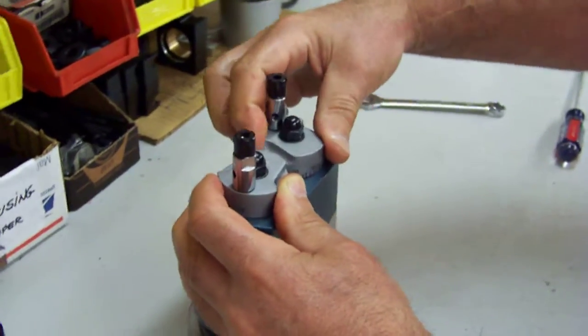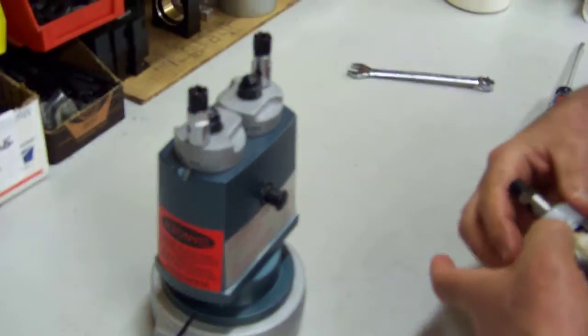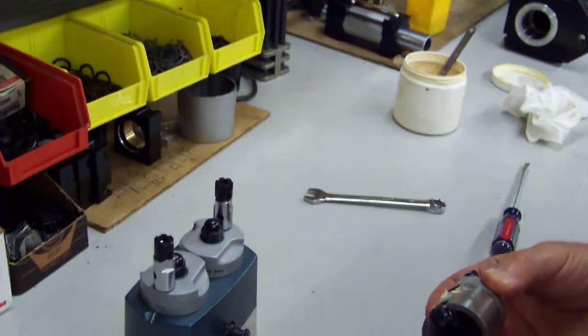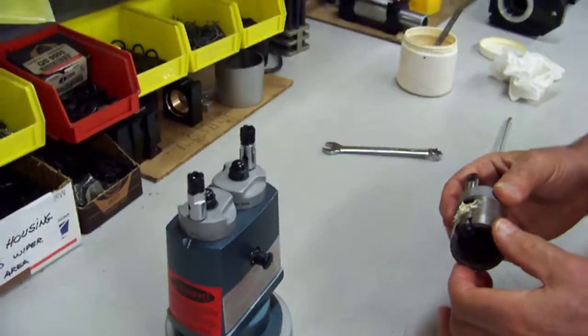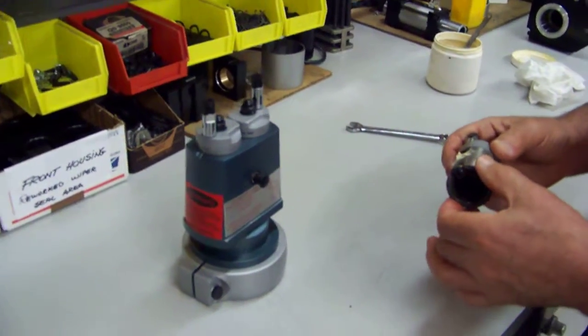For very heavy applications, we sometimes recommend that the customer keep a spare turret. This allows them to make repairs or changes almost instantly. It takes less than five minutes to change a turret.